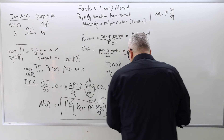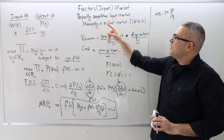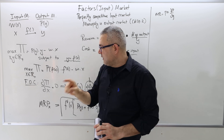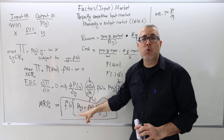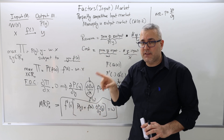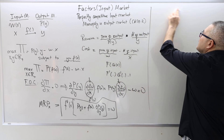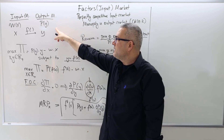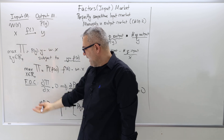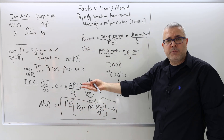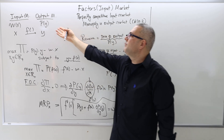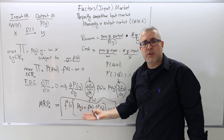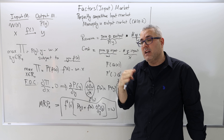So the firm, which is perfectly competitive in the labor market but a monopolist in the output market, will optimally hire the number of workers x that satisfies this MRP equals w equality, where y equals f(x). Although we don't have a numerical example here — which I will solve later — we can still compare the input level x from case two with the input level from case one.